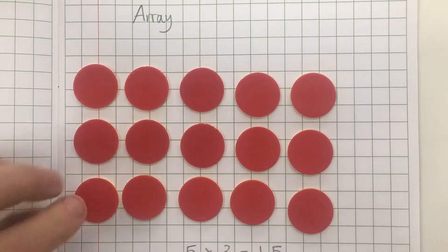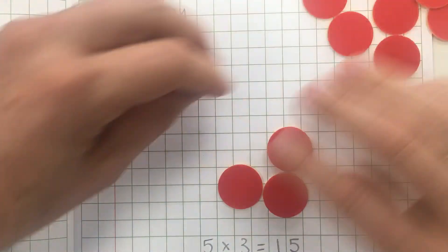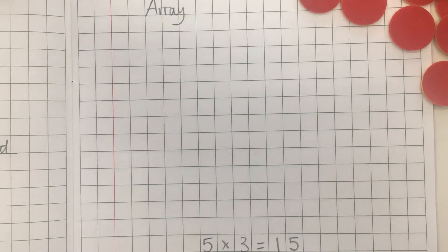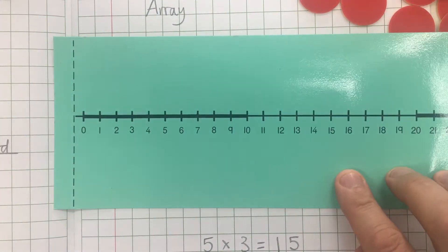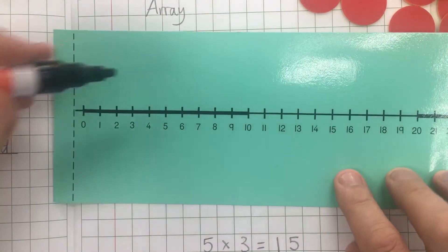Now I can also show my five groups of three using a number line. So here I've got a number line and I'm going to do five jumps of three.